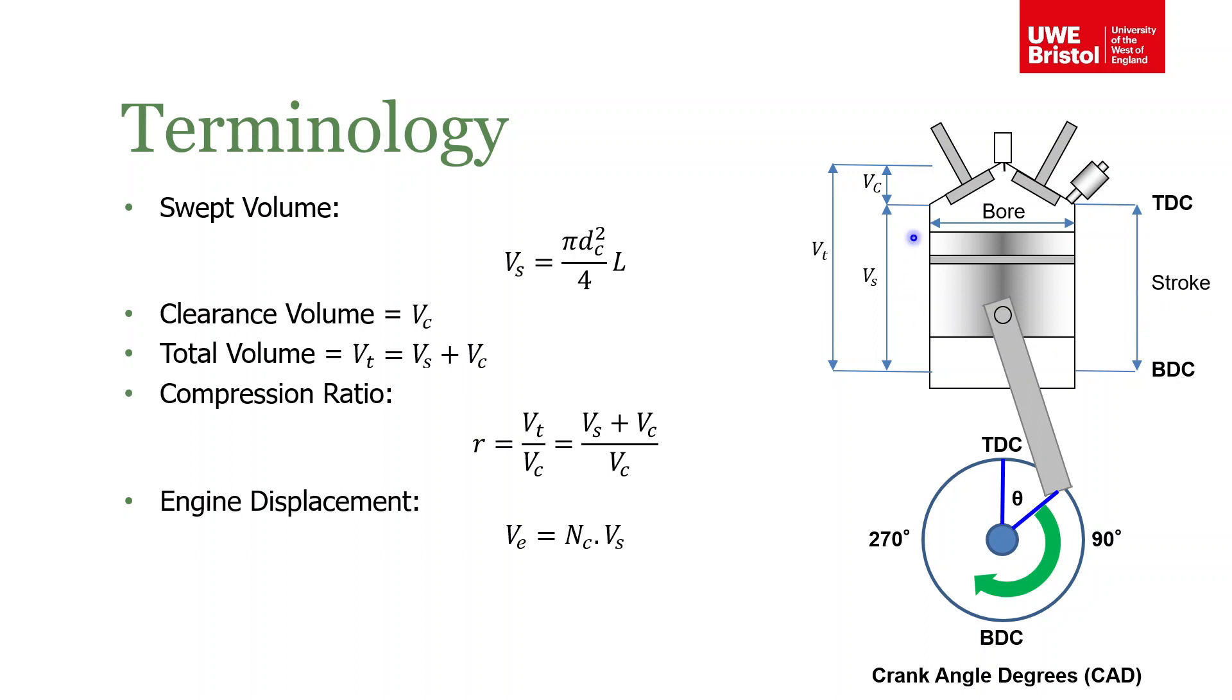The volume that the piston displaces over that stroke is the swept volume, denoted by volume subscript S. Now there's always in an engine, due to the packaging, a little bit of space at the top of the cylinder. You can see this is housing the valves and the spark plug and injector and so on. This is called the clearance volume.